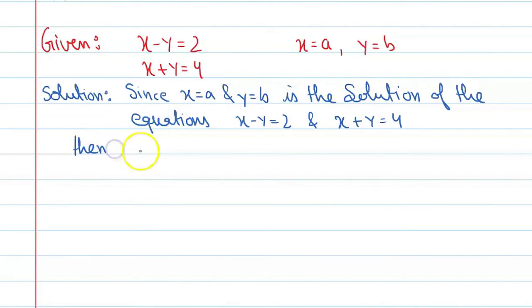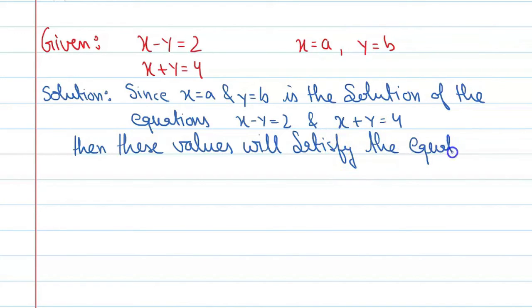Then these values will satisfy the equation. Alright, so you can say x minus y equal to 2 means a minus b is equal to 2, and the second thing is a plus b equal to 4.